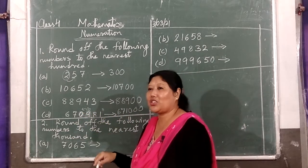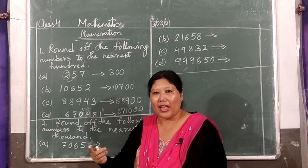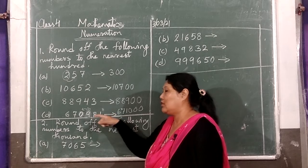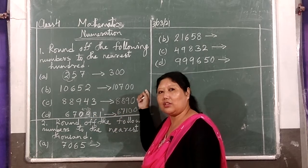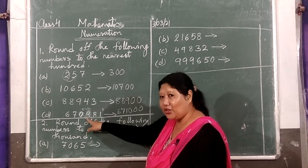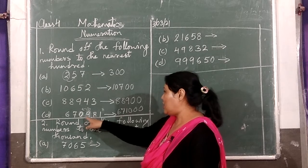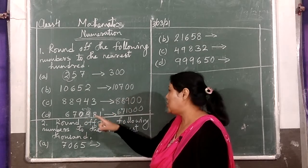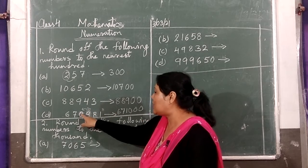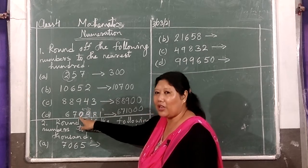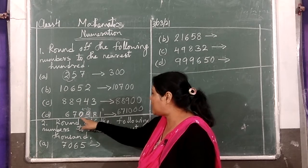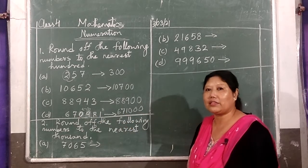Remember this — because this type of question I had given previously as homework, and some students left that question without answering because they didn't know what to do when it is 9. So here I am telling you: if it is 9 and it is supposed to go one step higher, it will become 10. The 0 stays here, and 1 gets added with the number in the next space. In this case, 1 plus 0 is 1, and 67 remains.